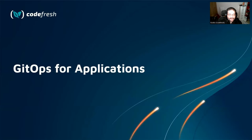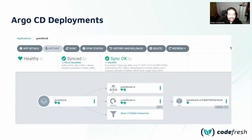Just to get everybody on the same page, this is Argo CD. If you've never seen it before, it's a GitOps controller. By default, out of the box, it works with Kubernetes applications. Here I have deployed a Kubernetes application — it's healthy, it's synced. So Argo CD tells me that what they have in Git is also in the cluster, and I can get an overview of the individual components like pods and services.